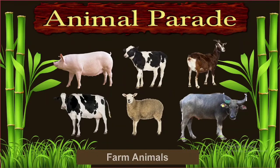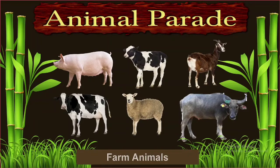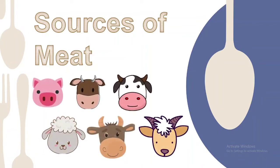These animals are our sources of meat — what we see in the market. Aside from being farm animals, they are also our sources of meat. Without them we would have difficulty getting meat. It is important to be familiar with the different kinds of meat from these farm animals so we know what to buy and what to look for when seeking a specific type of meat. That is our first topic today: sources of meat.